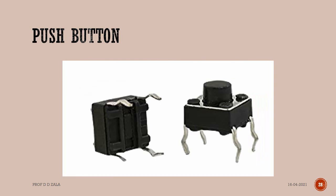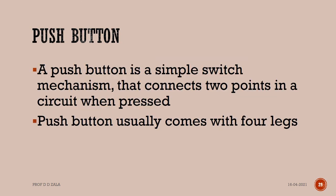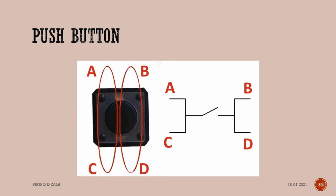Next, we will learn about the push button. The push button is a simple switch mechanism that connects two points in a circuit when it gets pressed. Push buttons usually come with four legs. Irrespective of the position of the switch, legs A and C are always connected. Similarly, leg B and D are always connected. When the switch is pressed, all four legs are connected to each other.